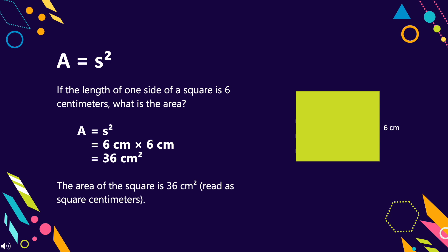If the length of one side of a square is 6 centimeters, what is the area? Our solution should be A equals S squared equals 6 centimeters times 6 centimeters equals 36 square centimeters. Therefore, the area of the square is 36 square centimeters.